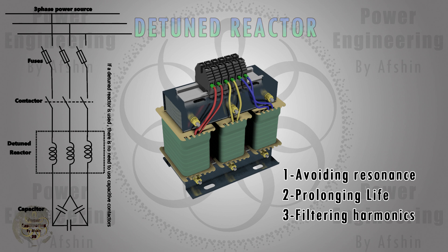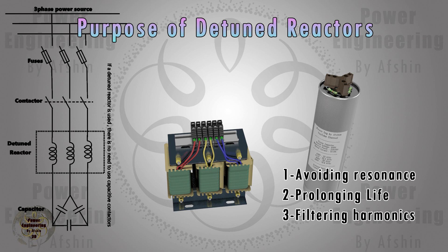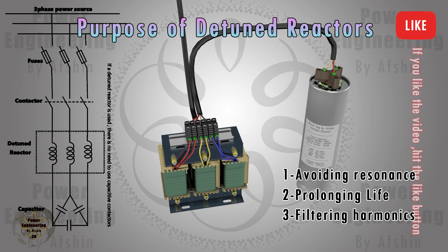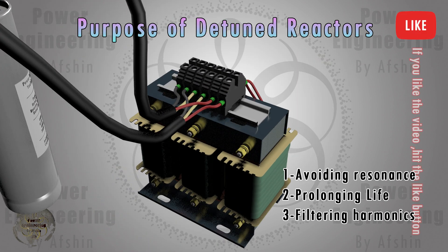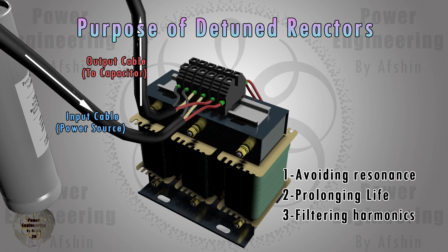In electrical systems, the combination of capacitors and the inductive reactance of the power system can create resonant conditions at harmonic frequencies. This resonance can amplify harmonic currents, causing excessive voltage distortion, overheating, and potential damage to equipment. Detuned reactors shift the resonance frequency below the lowest harmonic frequency present in the system, thereby preventing resonance.